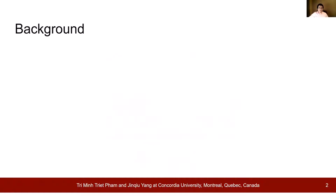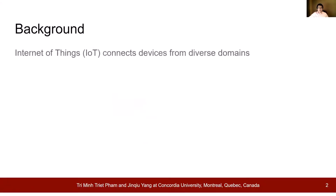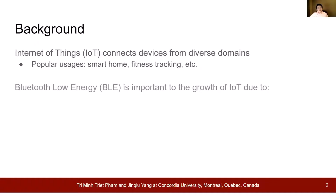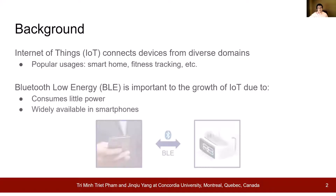As you may know, Internet of Things is gaining popularity in usage, and you may have IoT technologies in your home right now, like smartphone appliances, or even on you like the fitness tracking devices that you are wearing on your wrist. An important channel to interact with these IoT devices is your smartphone, via Bluetooth Low Energy, which is widely available on smartphones.